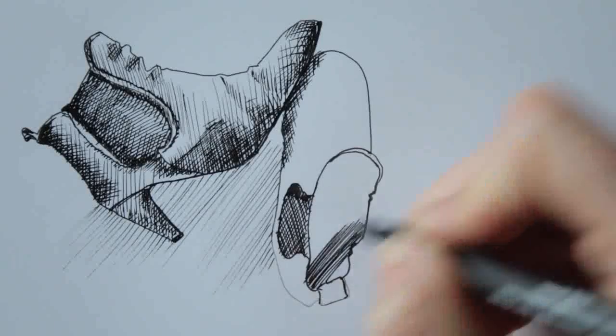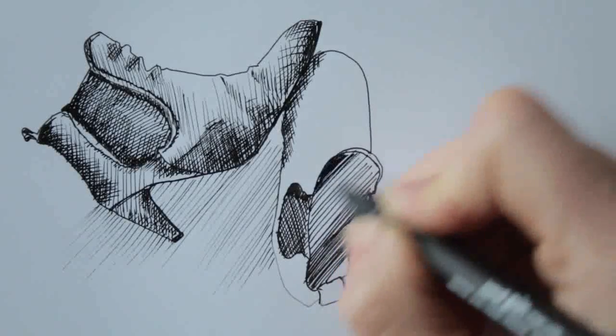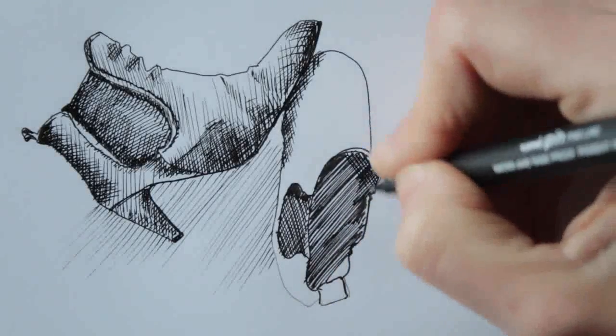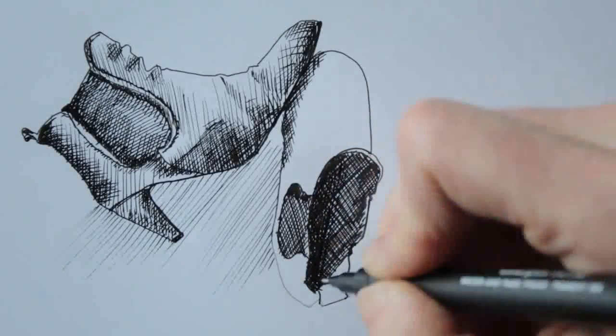The inside of the shoe is very dark and I can't see any details, so I'll just hatch and crosshatch until the area is dark.